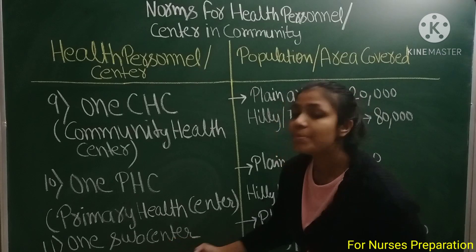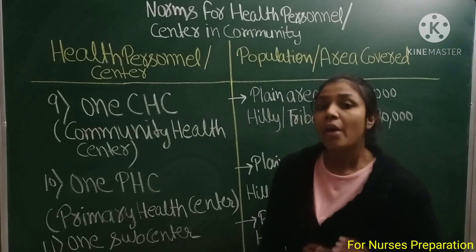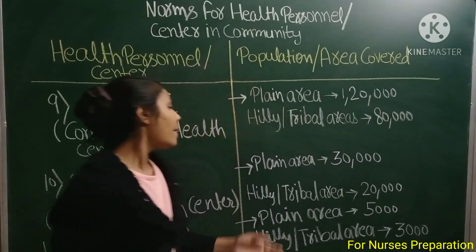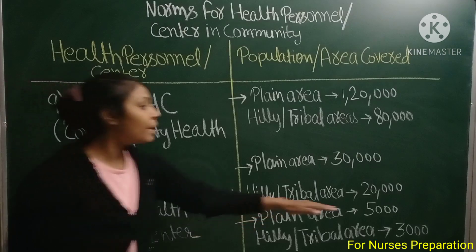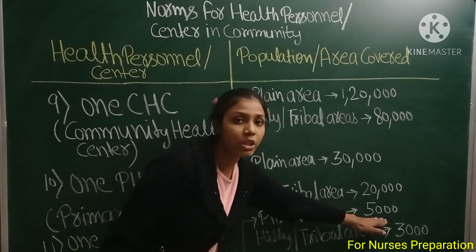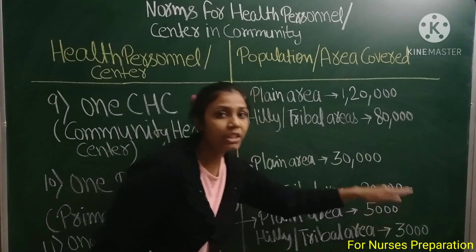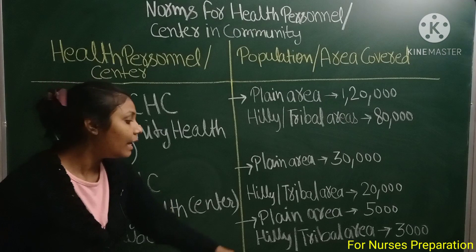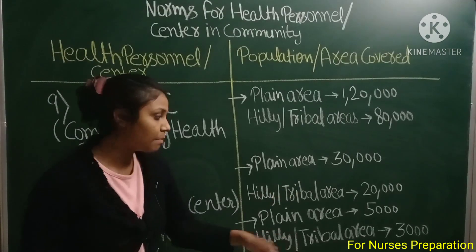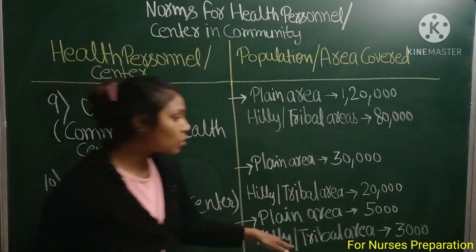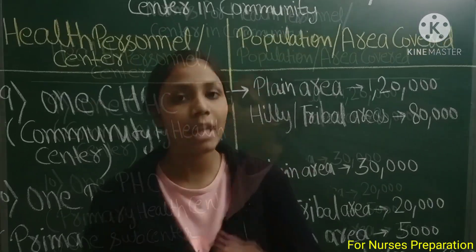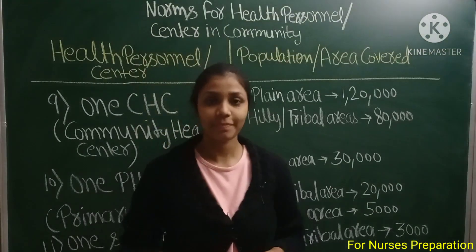Last, one sub center. One sub center को plain areas में 5,000 लोगों पर appoint किया जाता है, वहीं hilly या tribal areas में इसको 3,000 लोगों पर appoint किया जाता है.